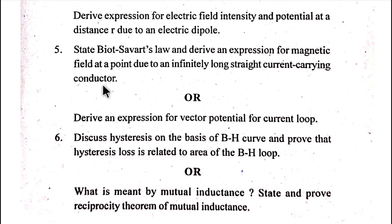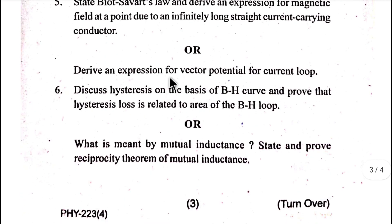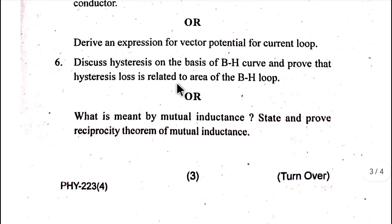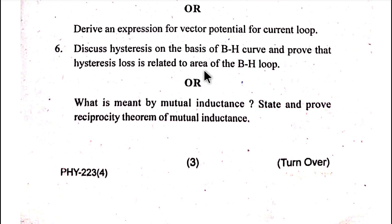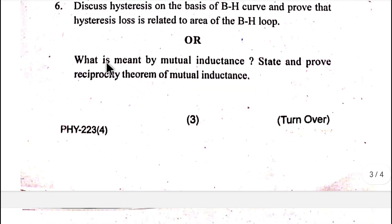Derive an expression for vector potential for a current loop. Number six: Discuss hysteresis on the basis of the BH curve and prove that hysteresis loss is related to the area of the BH loop.